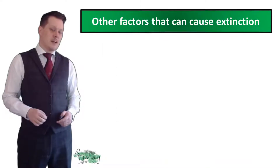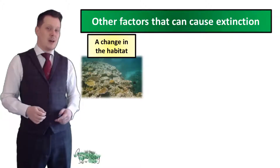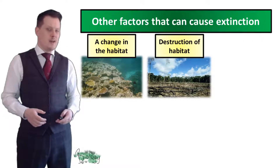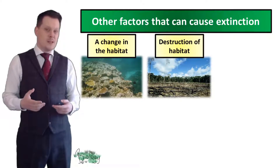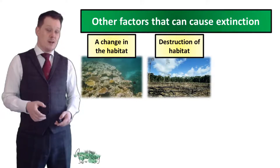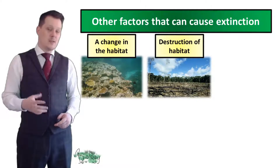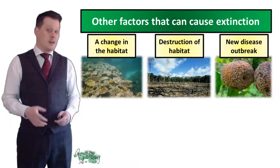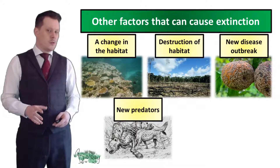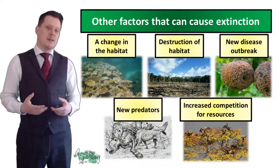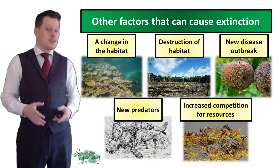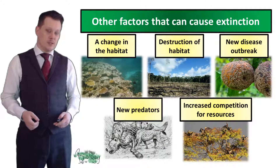There are other factors which can cause extinction, such as a change in habitat like the pH of a river or lake. It could be the destruction of a habitat by human intervention such as deforestation, or more natural causes such as fires in drought seasons. It could be an outbreak of a new disease, new predators, or the introduction of other animals causing increased competition for resources — as happened to the red squirrel in the UK when the grey squirrel was introduced.